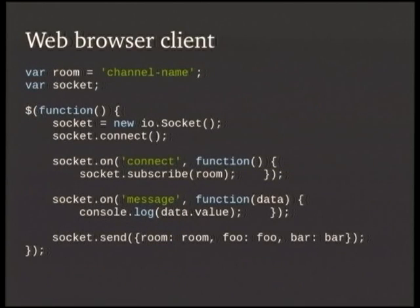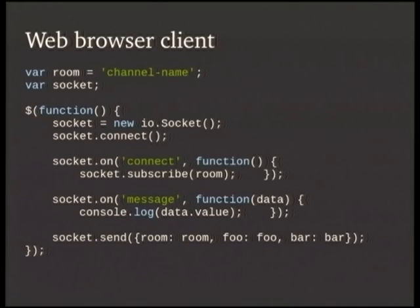This is the web browser code — just a bit of JavaScript. You connect to the server, subscribe to the channel or room. Here I'm taking a message passed down from the server, and here I'm sending a message, passing over some JSON. We typically work with JSON in the WebSockets area. It works well with Python and there are some libraries that make it easier on the Arduino side as well.